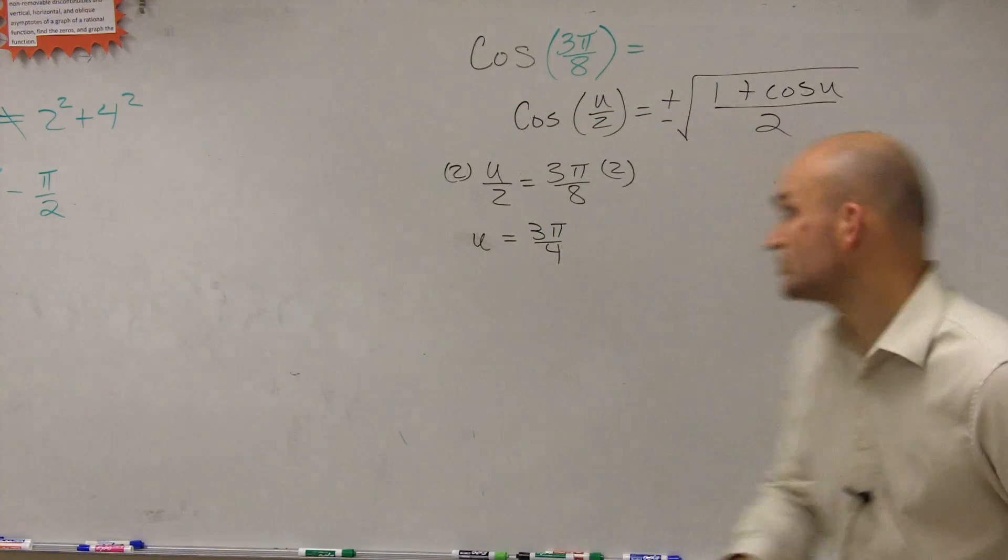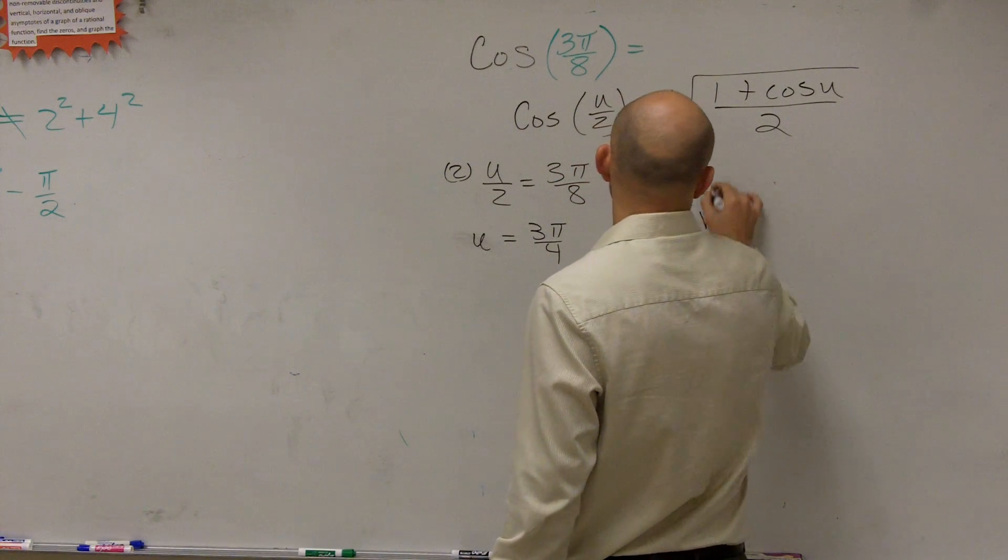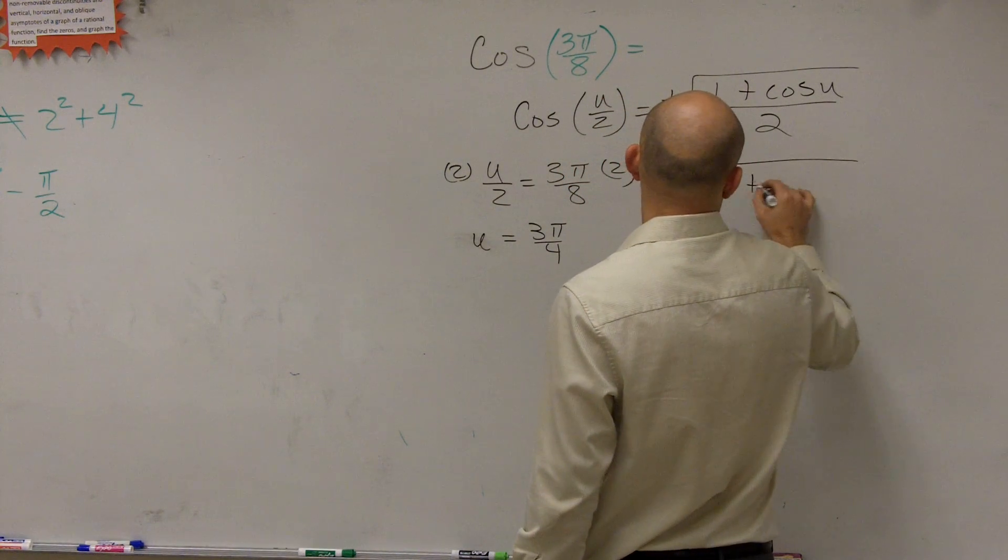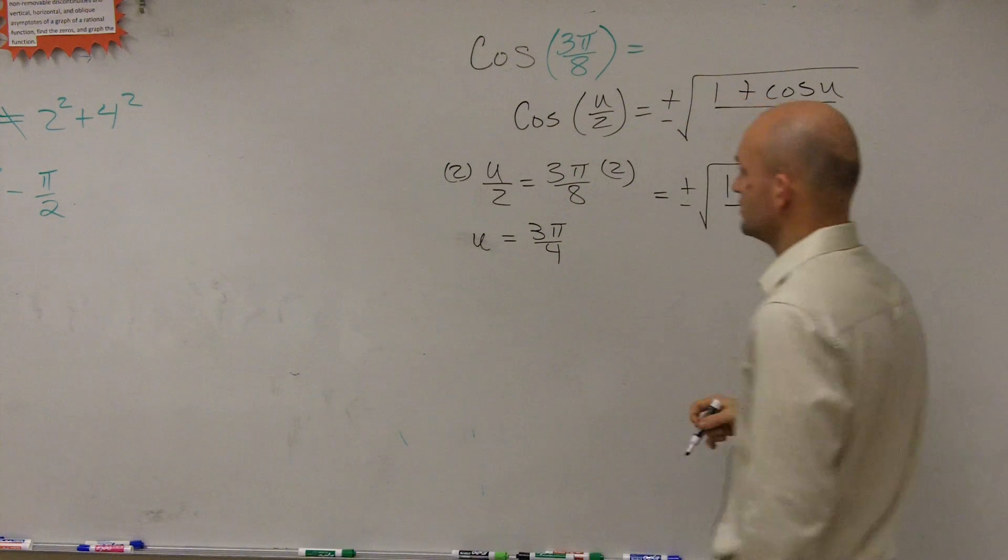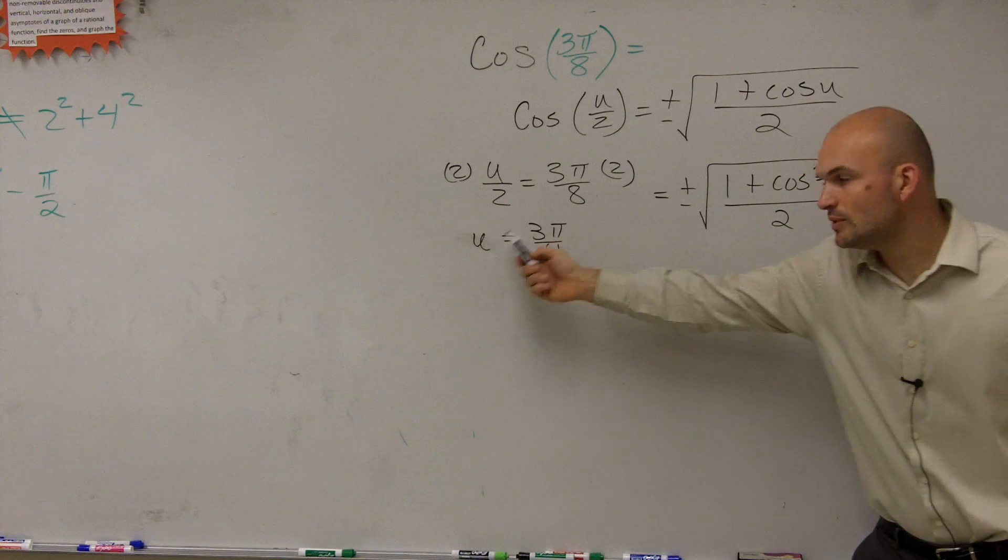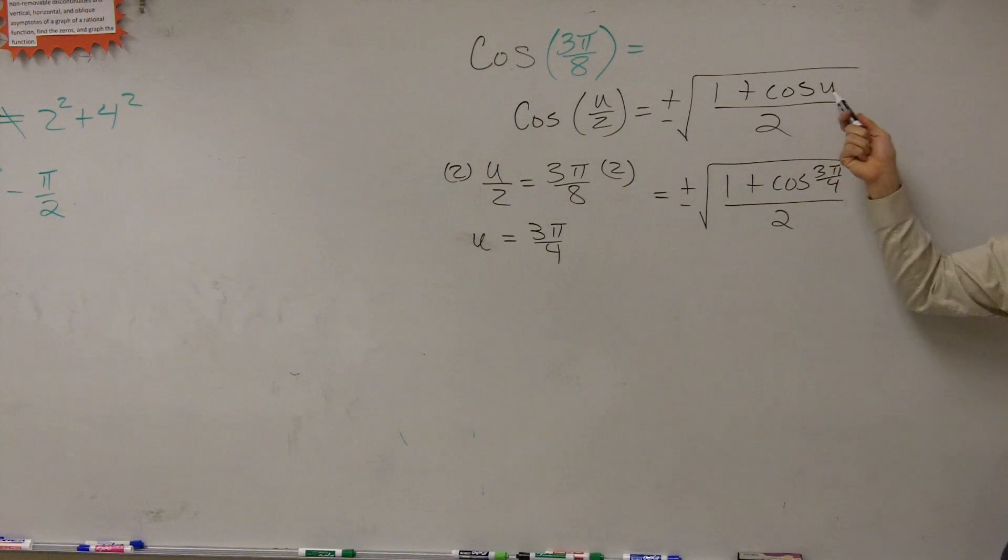So then really what we're doing is we're just going to plug that in. So we could say x equals plus or minus the square root of 1 plus the cosine of 3π/4 divided by 2. Because our u equals 3π/4. So you plug 3π/4 in for u.